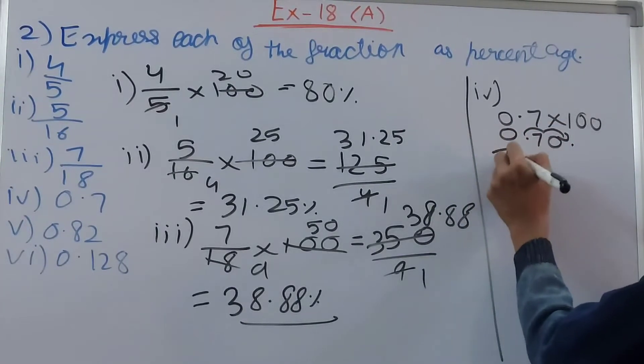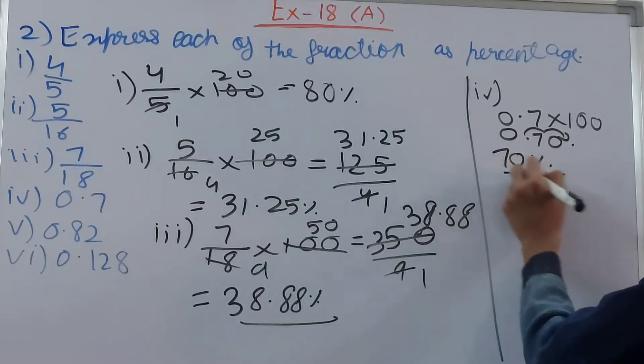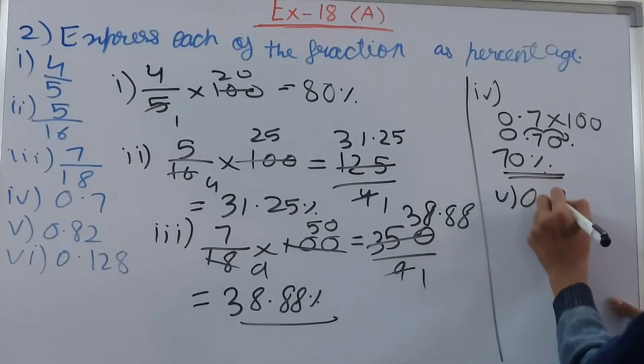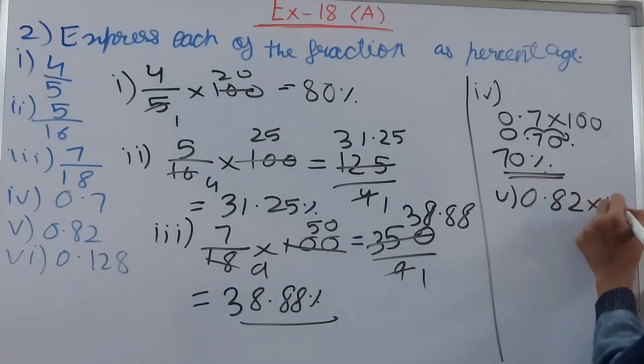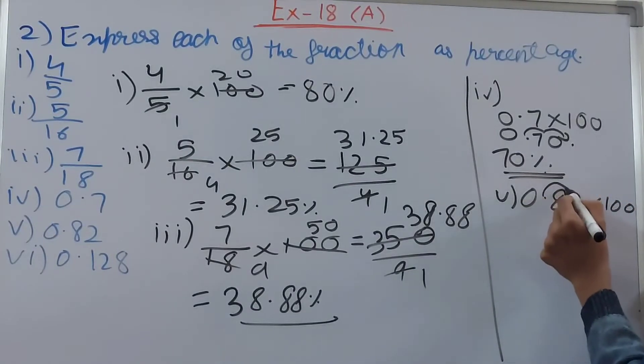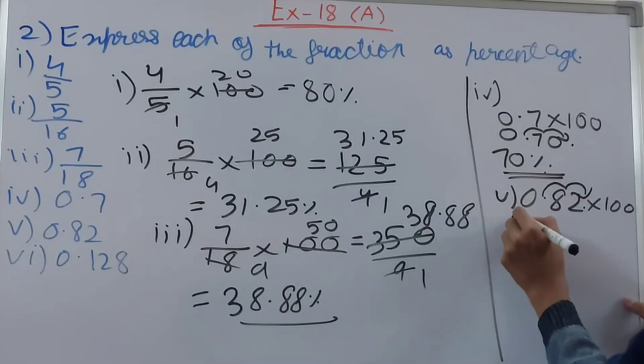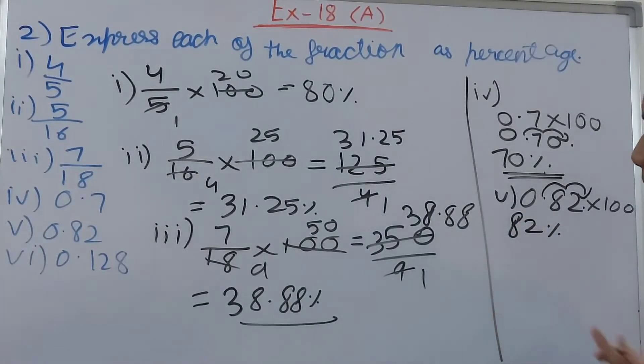Then fifth one, we have 0.82, again multiply by 100. So decimal place shifts two places here, so this becomes 82 percentage.